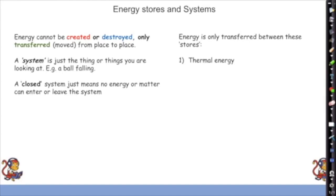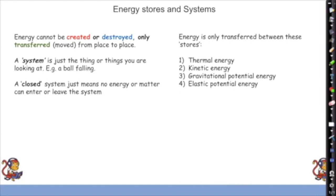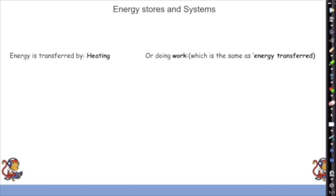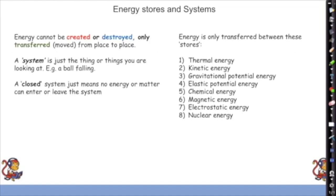Energy is only transferred between stores. These stores are: thermal energy (heat), kinetic energy (movement), gravitational potential energy (height above ground), elastic potential energy (springs and stretchy things), chemical energy (petrol, foods, glucose), magnetic energy, electrostatic energy (stored in electric fields), and nuclear energy (inside an atom). Those are the eight different types you need to know.